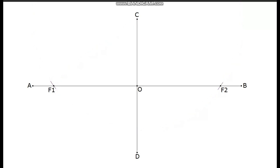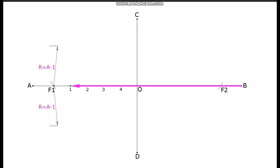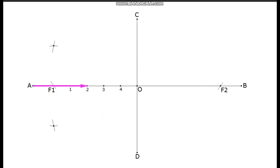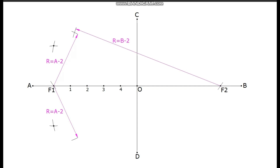Mark a few points between F1 and O. Measure the distance of the first point from A; with F1 as center, draw arcs above and below the major axis. Measure the distance of B1; with F2 as center, draw arcs above and below the major axis to intersect the previous arcs. Measure the distance of A2; with F1 as center, draw arcs above and below the major axis. Measure the distance of B2; with F2 as center, draw arcs above and below the major axis to intersect the previous arcs.